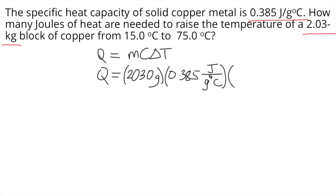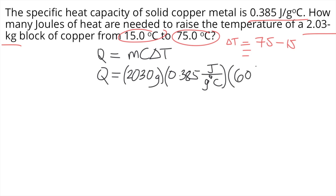Delta T is the change in temperature — that's the final temperature minus the initial temperature. In our problem, the final temperature is 75 degrees Celsius and the initial temperature is 15 degrees Celsius. So the change in temperature is 75 minus 15, which equals 60 degrees Celsius.